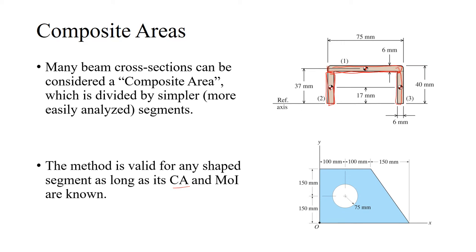For example, if we have a shape with a triangle (section one), a rectangle (section two), and a circle (section three), we can easily determine each centroid location, and either look up in a table or recall from memory the moments of inertia about each segment's centroidal axis.